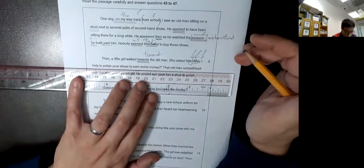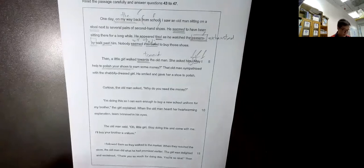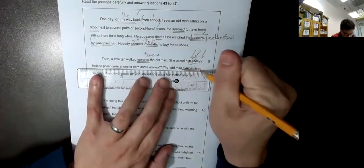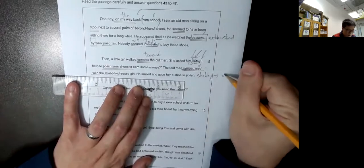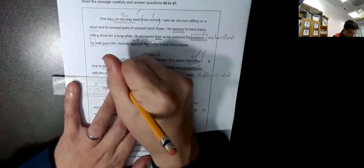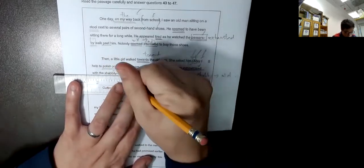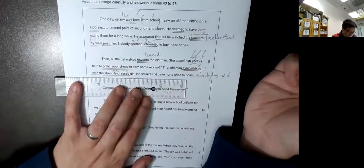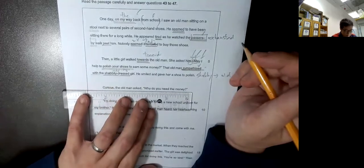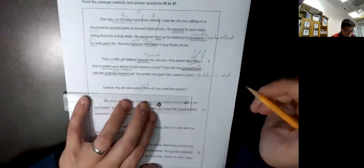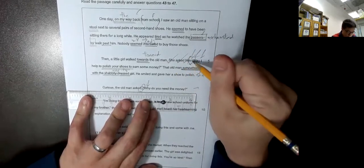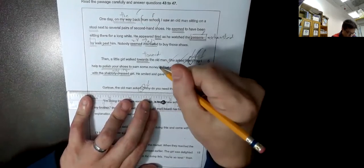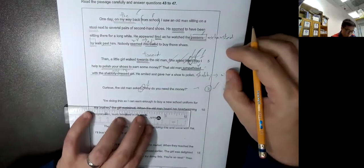May I help to polish your shoes to earn some money? Polish your shoes to earn enough money. But that old man sympathize. Sympathize with the shabby dress. Shabby 本身是這樣寫,解釋很舊的意思. Why do you need the money?